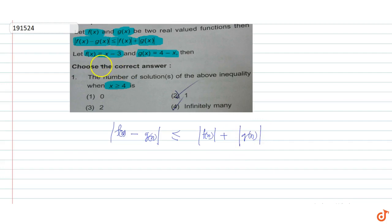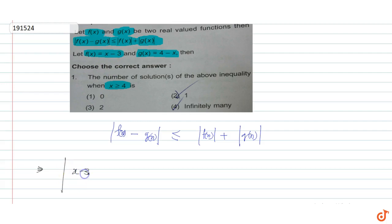For this, we take the interval x ≥ 4. Let me solve this inequality. The modulus value of f(x) is |x - 3|. So f(x) - g(x) becomes (x - 3) minus (4 - x), and g(x) = 4 - x.